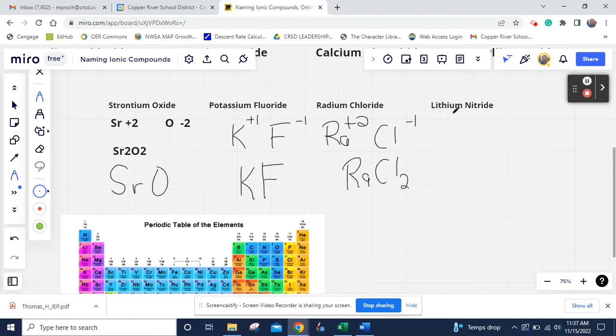Last one. So we have lithium nitride. We find lithium right there. We know Li, it's a symbol. We know it's a plus one. And then we have nitrogen, N. And we know it's going to be right here. It's in group 15. So it's a minus three. Three is going to go to lithium, one to nitrogen. And we got Li three. And you don't have to write the one.